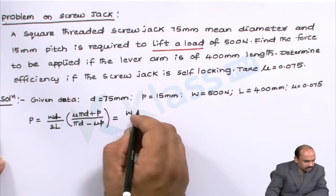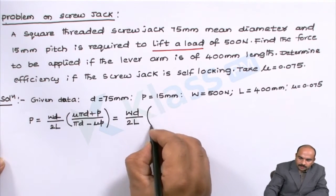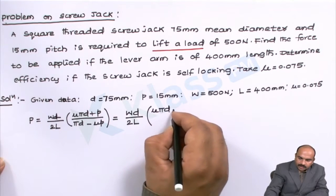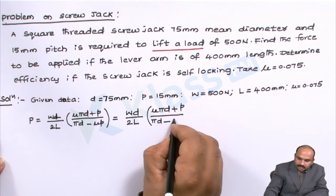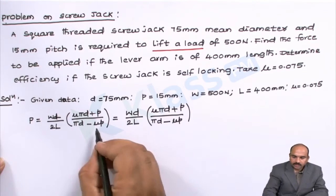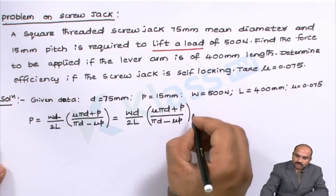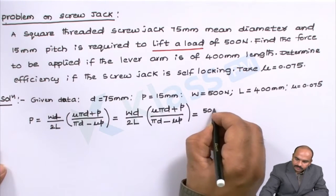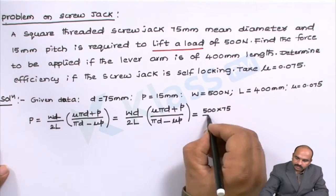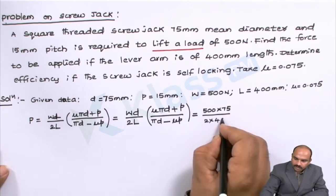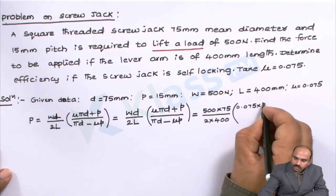Now substituting all the values: W = 500, d = 75, L = 400, mu = 0.075, and p = 15 into the formula P = W·d / 2L · (μπd + p) / (πd − μp).